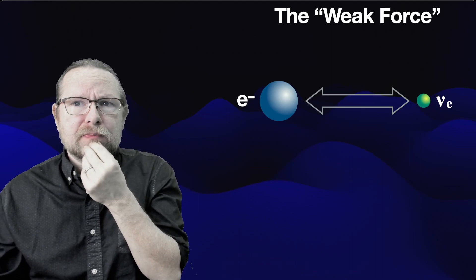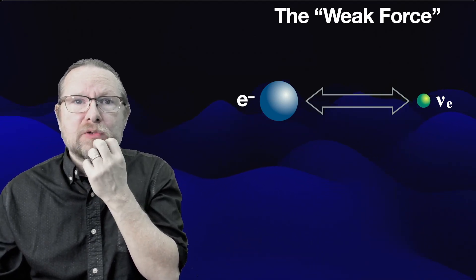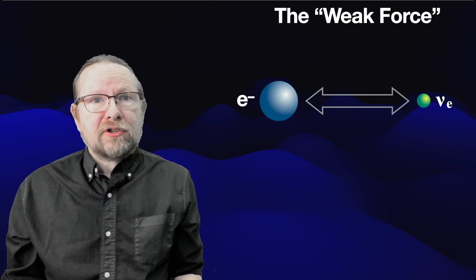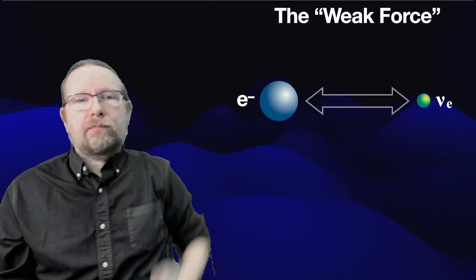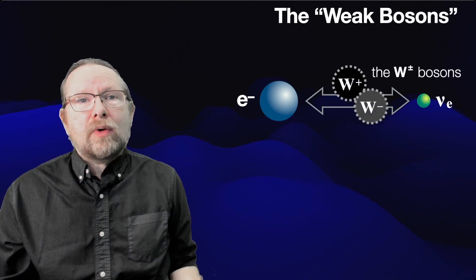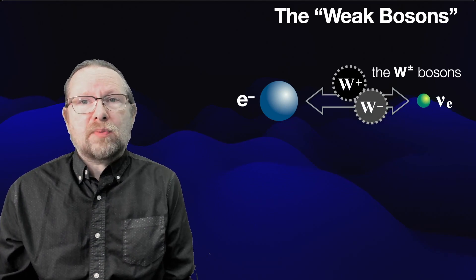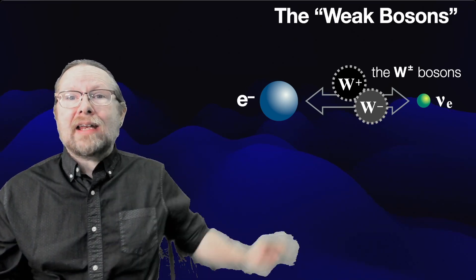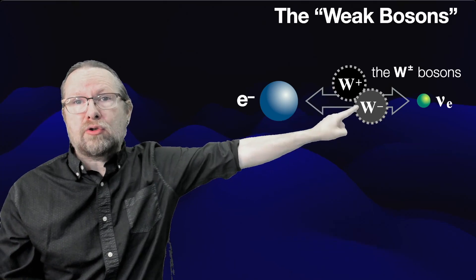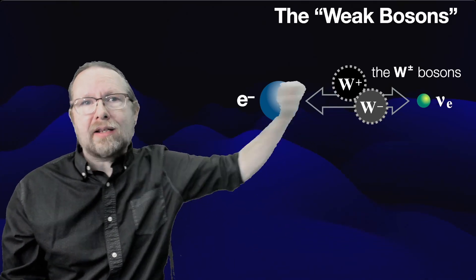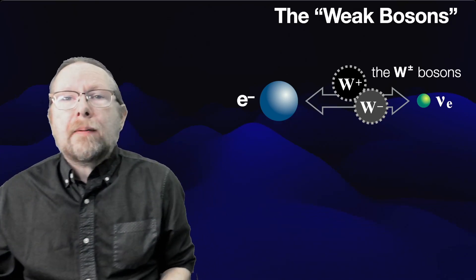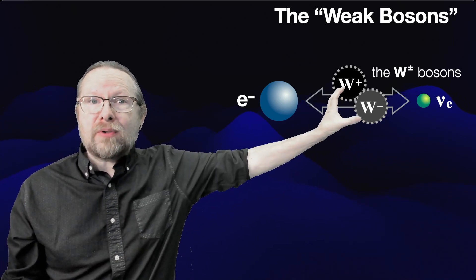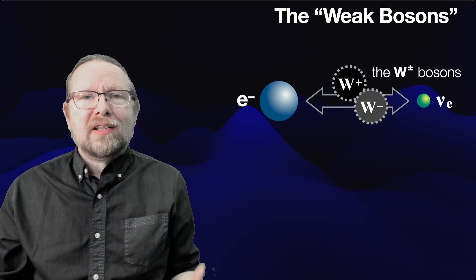In the 1970s, we discovered a particle responsible for this exchange force — the interaction between neutrinos, leptons, and other particles in the universe. We gave this particle the name the weak boson, or the W boson. A W boson is different from a photon in that it has electrical charge of its own, so there are two flavors: the positive W boson and the negative W boson, which are antiparticles of one another. It's also different from the photon in that W bosons have mass — a photon has no mass, but a weak boson does. And that is actually the reason the weak force is so weak.